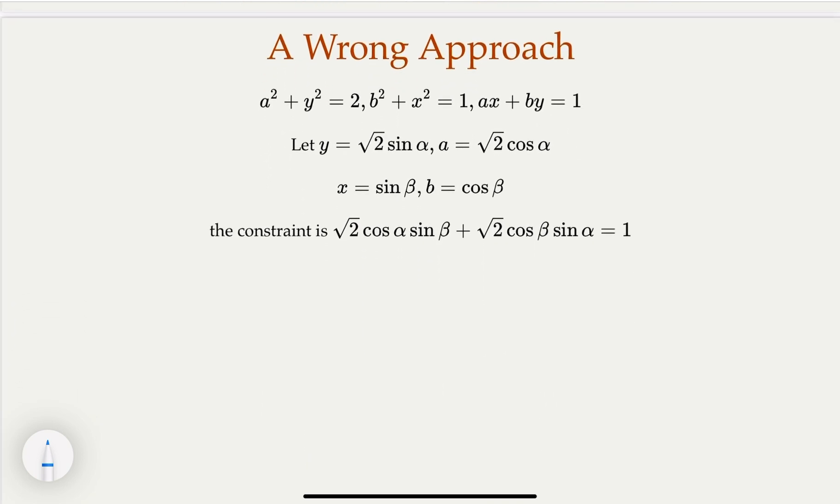Usually when we see the square here, it's natural to use sine and cosine. For example, this is on the circle here, a and y. So you assume y equals sine, a equals cosine, r here will be square root of 2. And the second one is the unit circle, so x and b in this alpha and beta. And then you can turn this constraint into this algebra here, right?